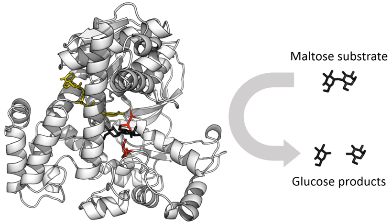Examples of post-translational modification include phosphorylation, myristoylation, and glycosylation. For example, in the response to insulin, the phosphorylation of multiple enzymes including glycogen synthase helps control the synthesis or degradation of glycogen and allows the cell to respond to changes in blood sugar. Another example of post-translational modification is the cleavage of the polypeptide chain. Chymotrypsin, a digestive protease, is produced in inactive form as chymotrypsinogen in the pancreas and transported in this form to the stomach where it is activated. This stops the enzyme from digesting the pancreas or other tissues before it enters the gut. This type of inactive precursor to an enzyme is known as a zymogen or proenzyme.